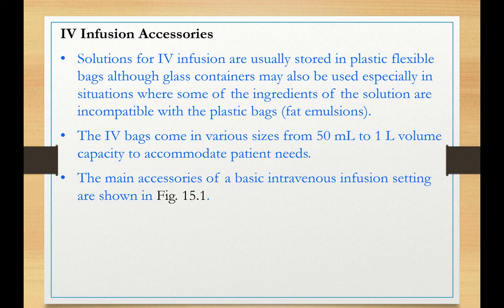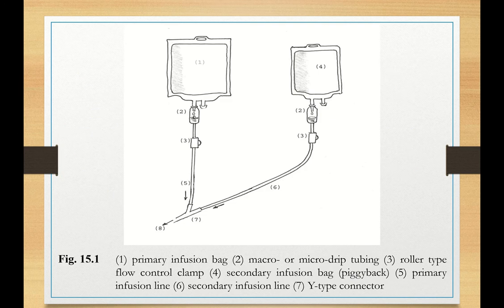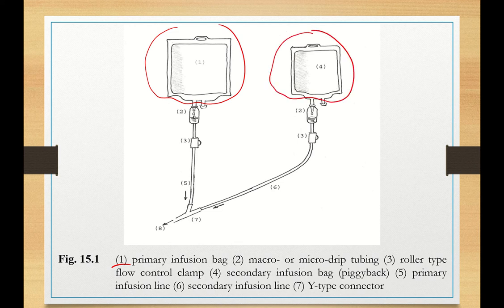Let us now discuss some IV infusion accessories. Solutions for IV infusion are usually stored in plastic flexible bags, although fat emulsions or lipids — because of their affinity to plastic polymers — are usually stored in glass containers. IV bags come in various sizes, most commonly between 50 ml and 1 litre. Here we have the primary infusion bag, whereas this one is called the piggyback, which is a secondary infusion bag.